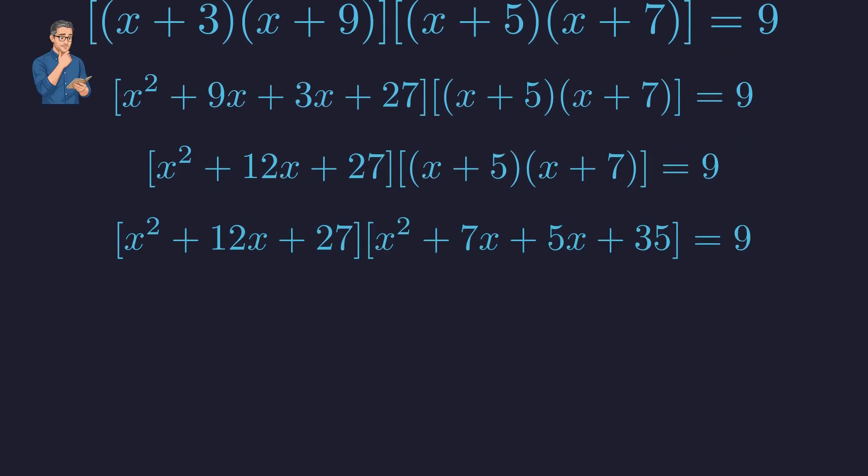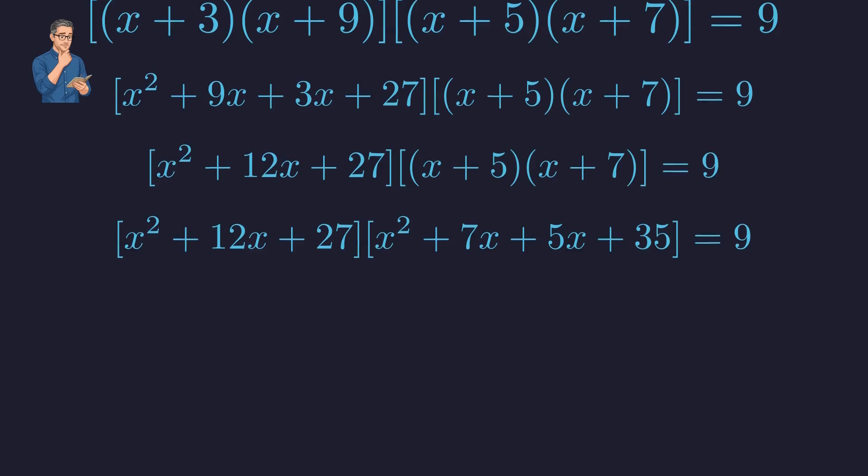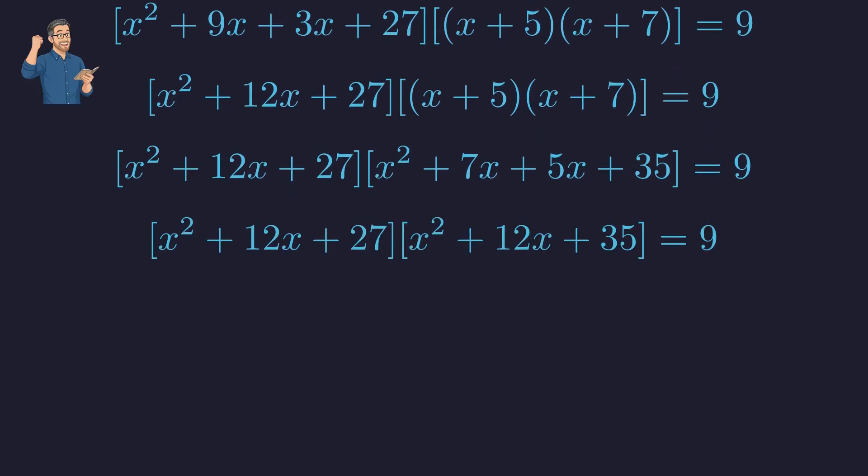Now, we repeat the process for the second bracket. And this reveals the pattern. A common term x² + 12x appears in both factors. I see. That common block is what simplifies everything. It's the breakthrough.